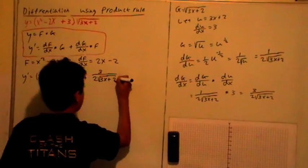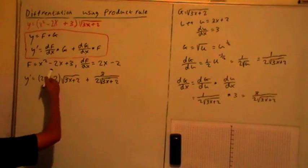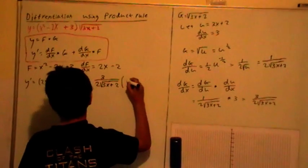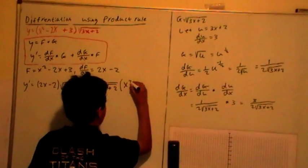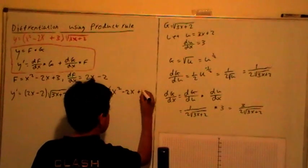Times f, and f is here. So, there we go, x squared subtract 2x plus 3.